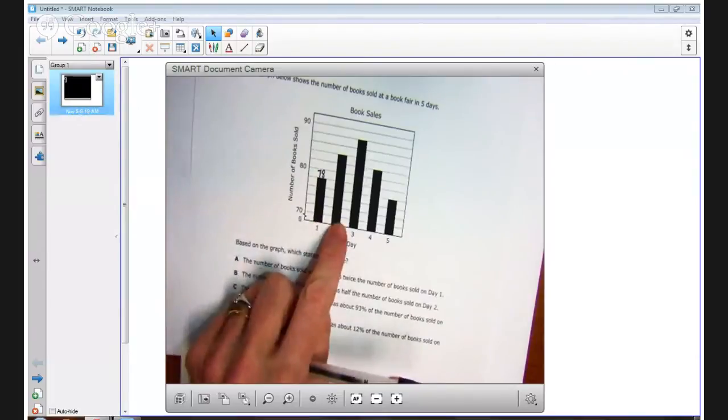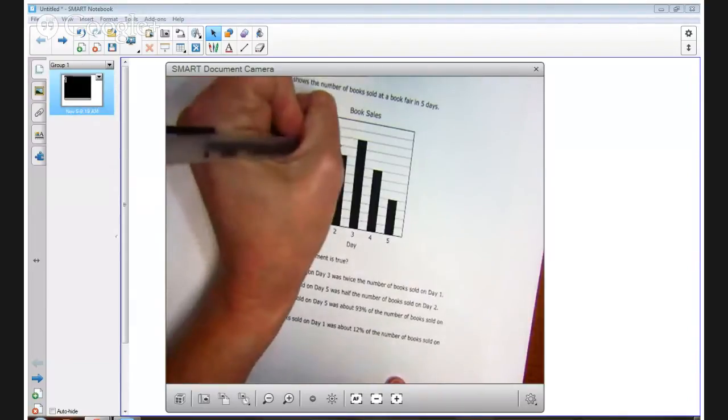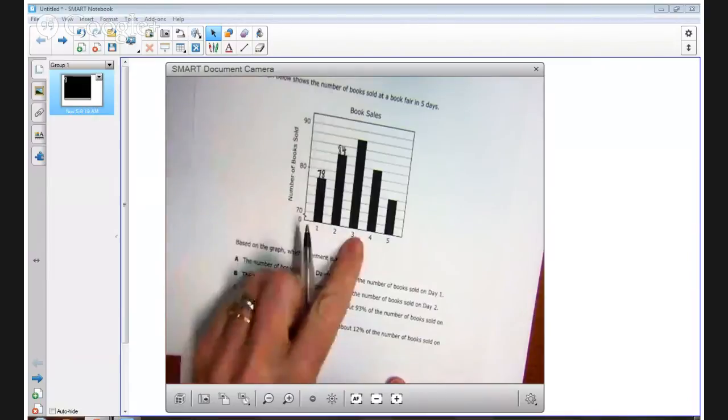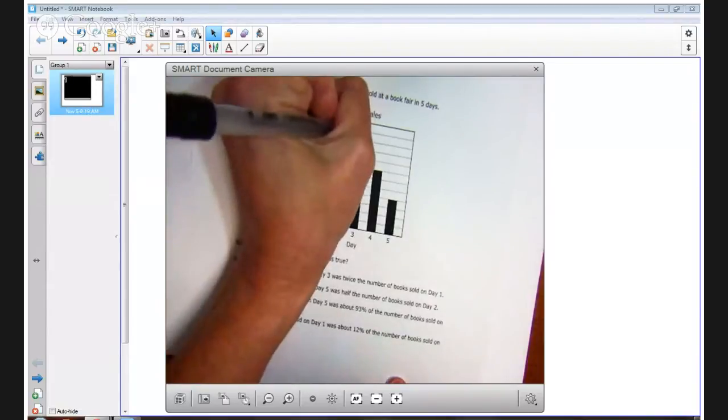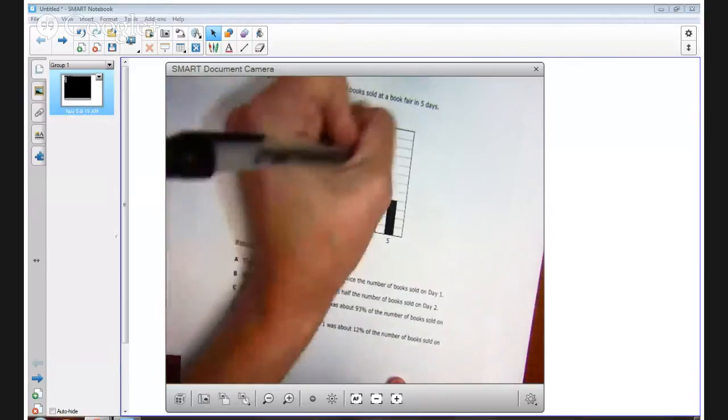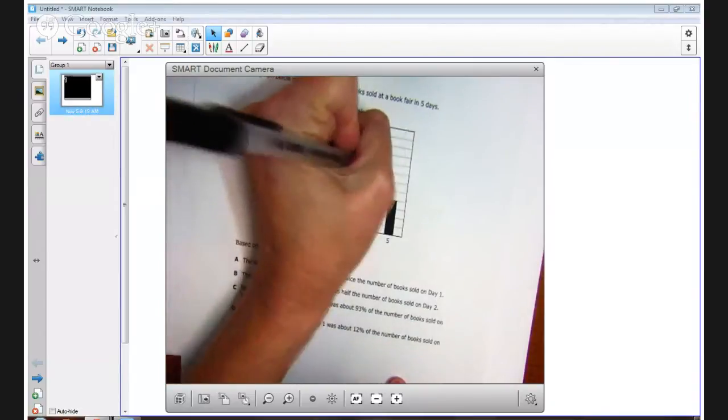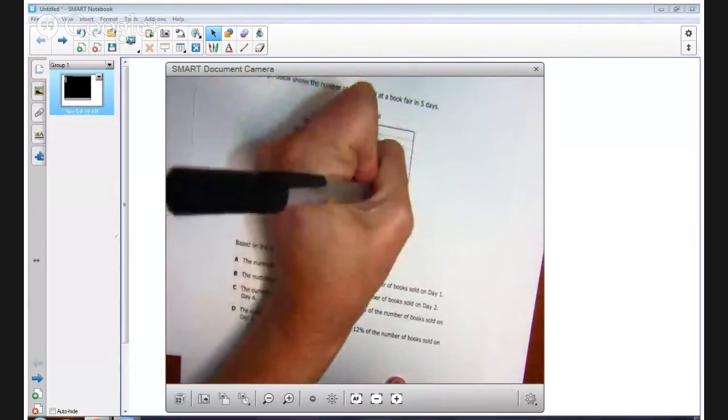We'll go to the second bar and do the same. So if this is 80 and we're counting by twos, this is 82, 84. The third bar would be 82, 4, 6, 88. The fourth bar would be 82, and the last bar is 72, 74, 76.